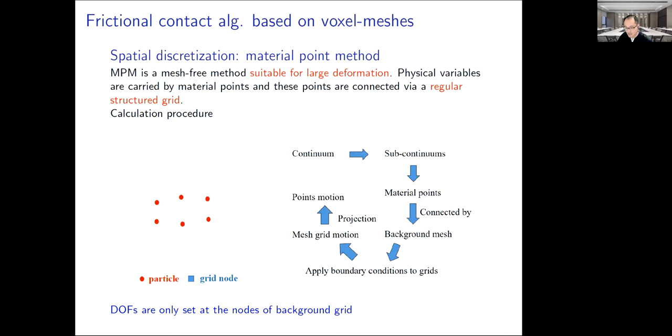In the last step, a new mesh is adopted. We can see that the unknowns are only solved at the nodes of the background grid. Therefore, the number of degrees of freedom is dramatically reduced than that of conformal meshes.